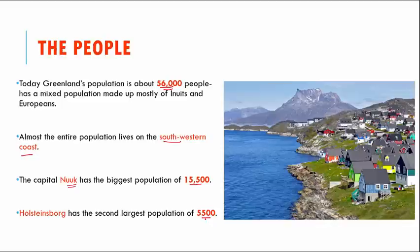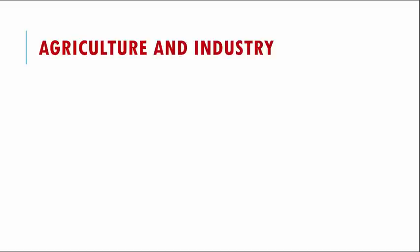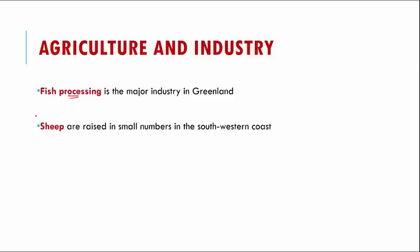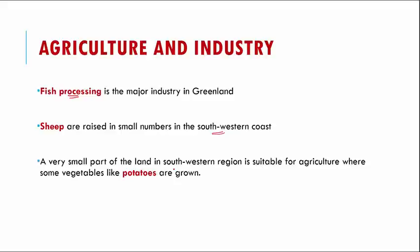When we look at agriculture and industry, fish processing is a major industry in Greenland because water bodies are so close by. Apart from that, sheep are raised in very small numbers on the southwestern coast during summer months. A very small part of the southwestern region is suitable for agriculture, and in those small areas they grow vegetables like potatoes.